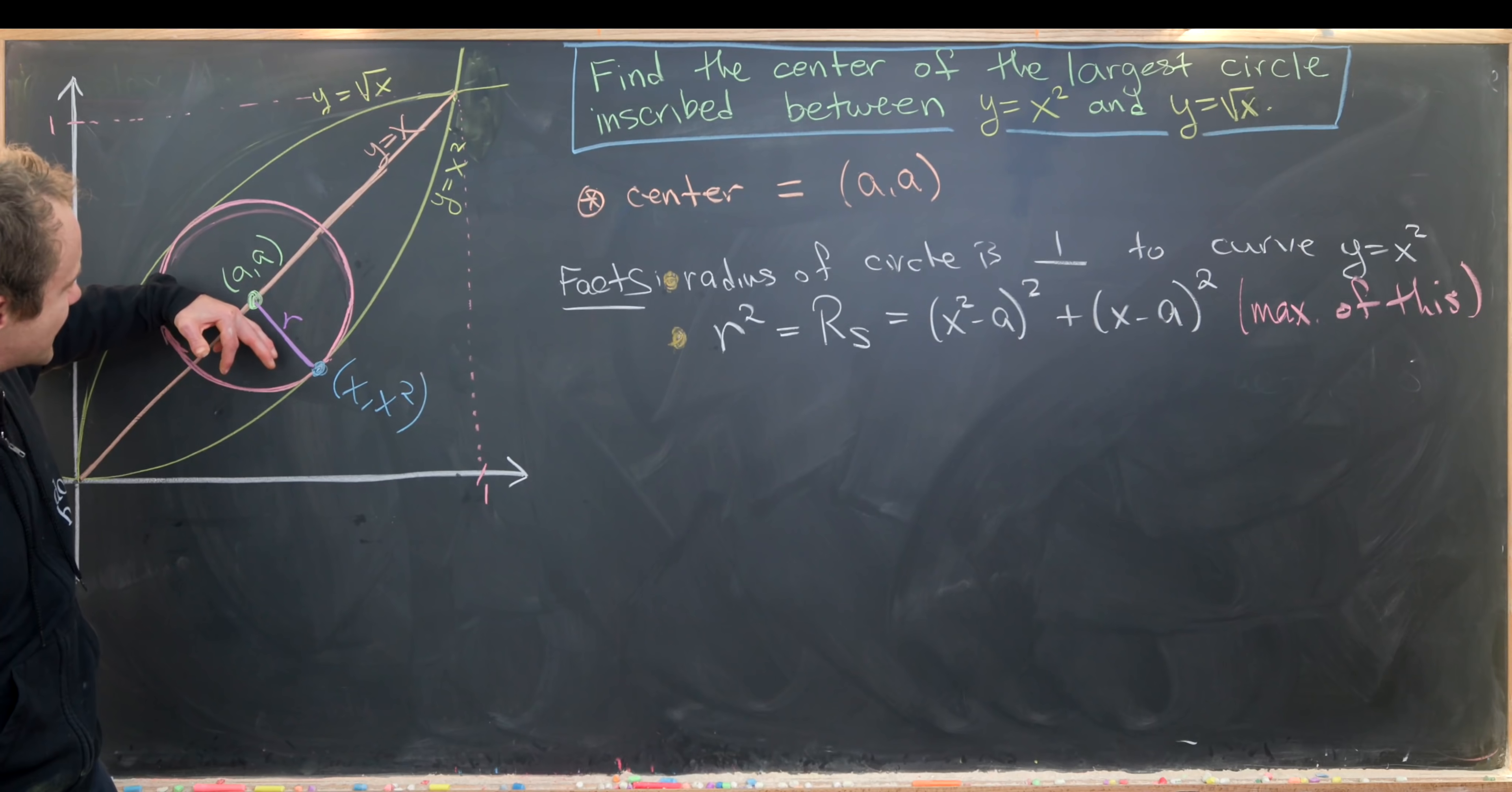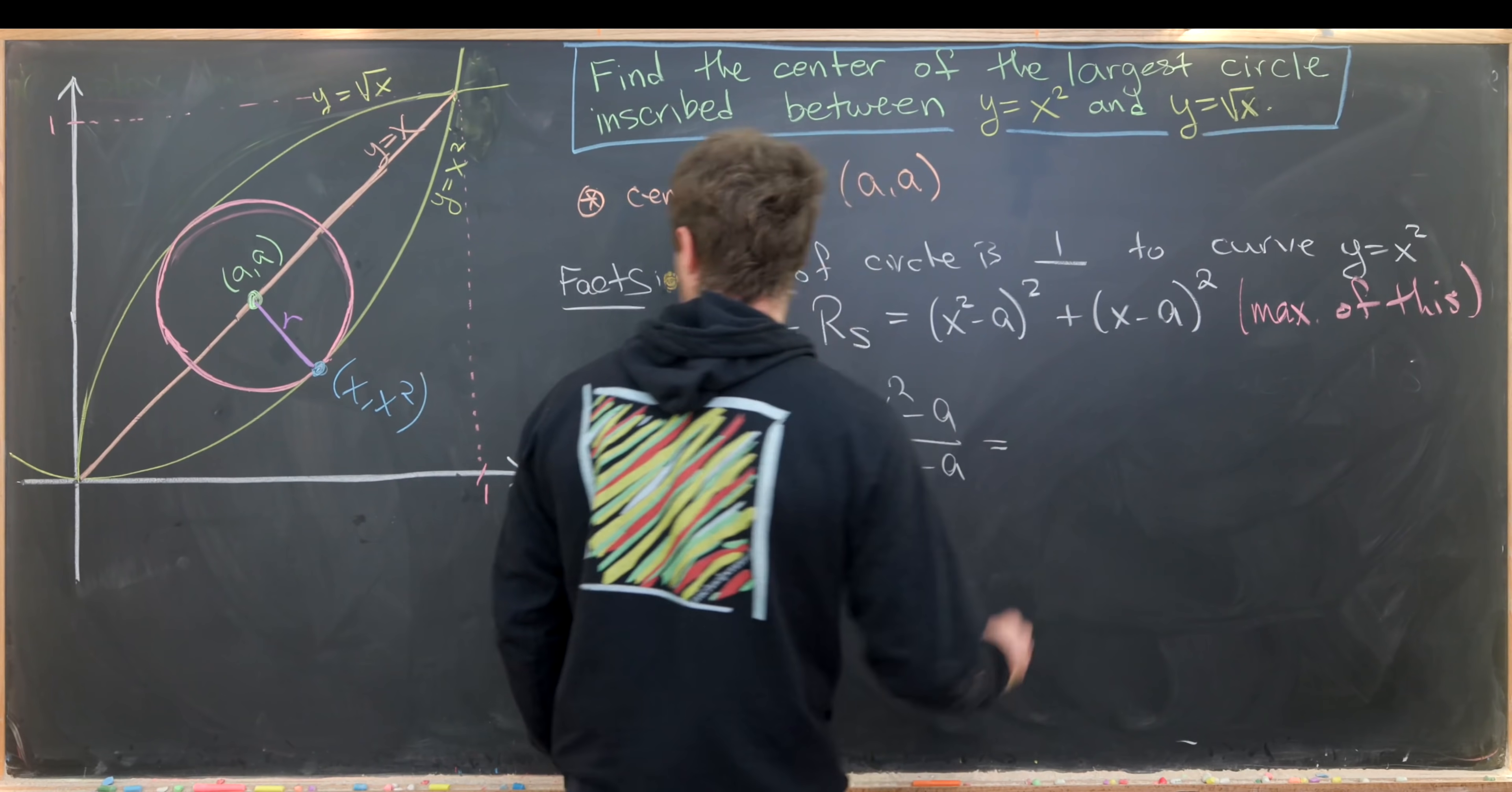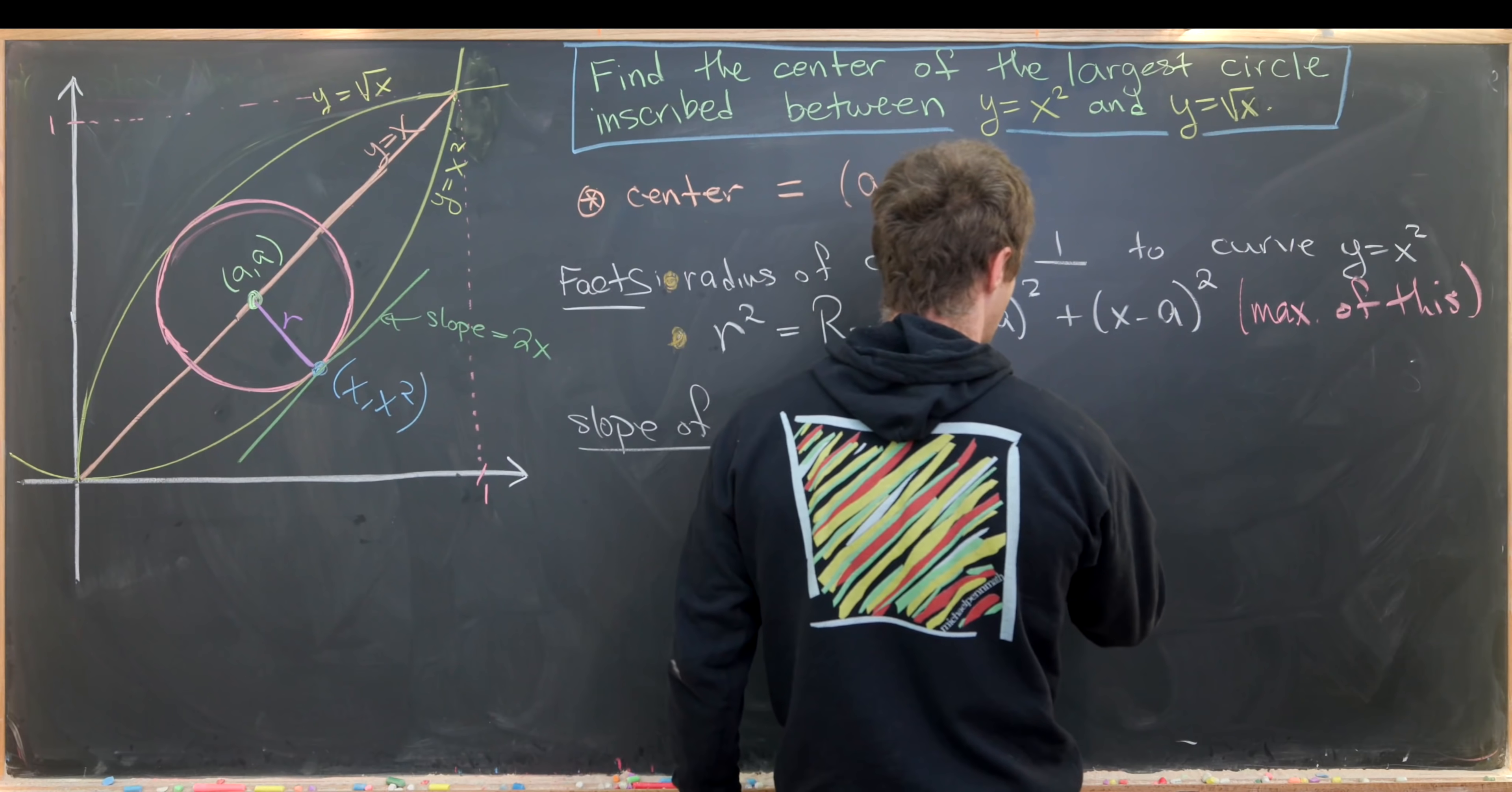Let's measure the slope of this radius. That's easy with the slope formula: change of y over change of x, which is x squared minus a over x minus a. This must equal the negative reciprocal of the slope of the tangent line of our curve y equals x squared at this point. The slope of the tangent line is 2x from the derivative, so the negative reciprocal is minus 1 over 2x.